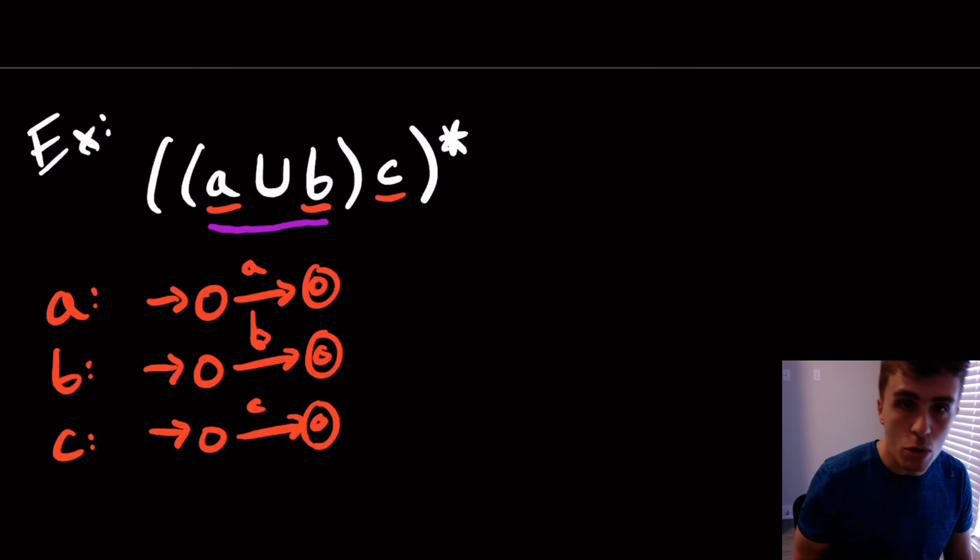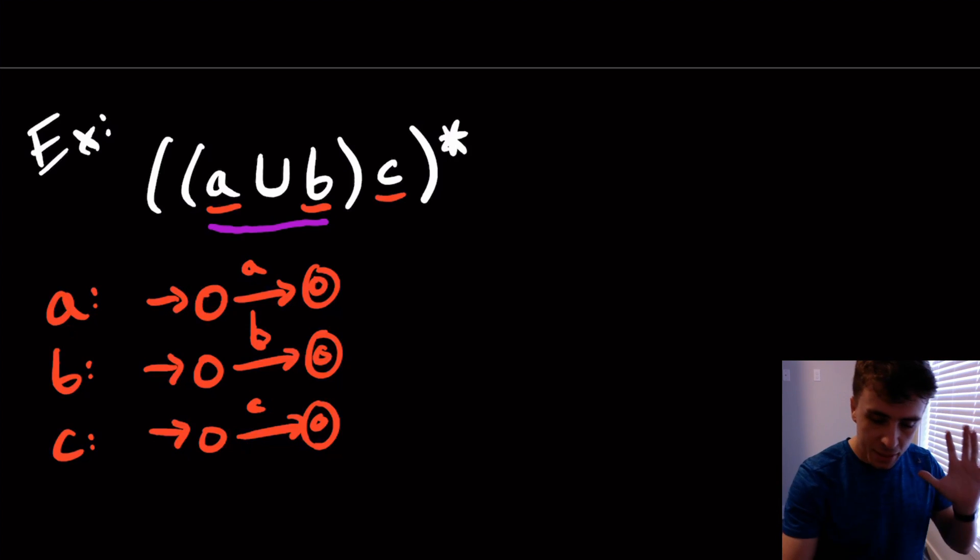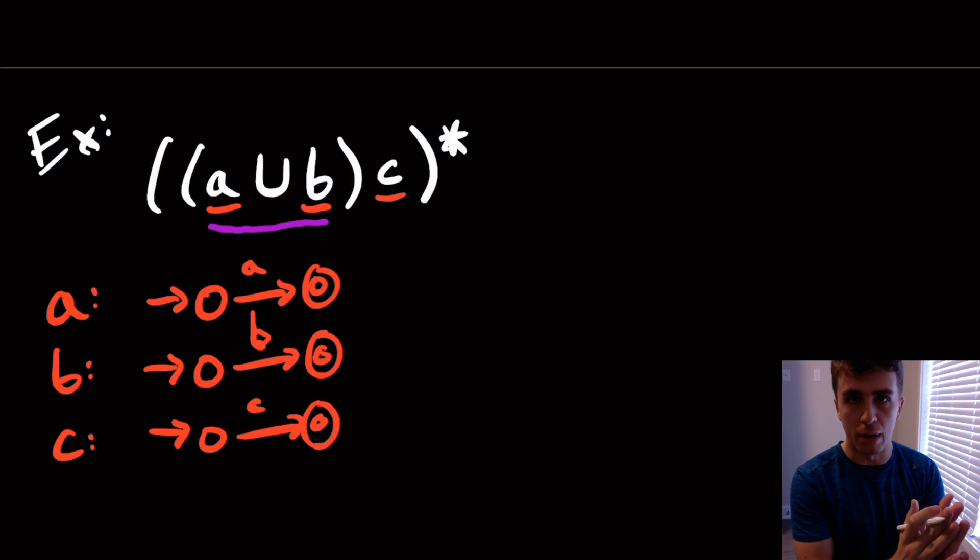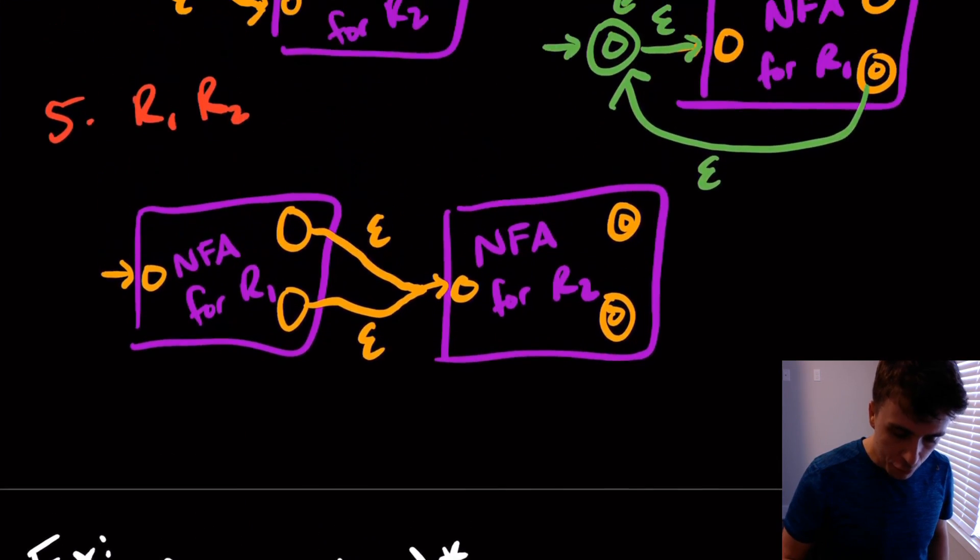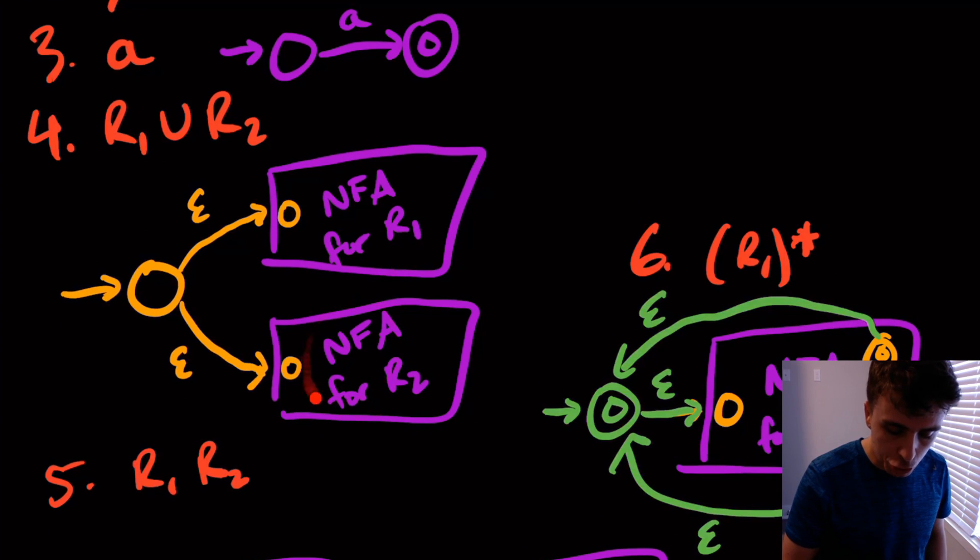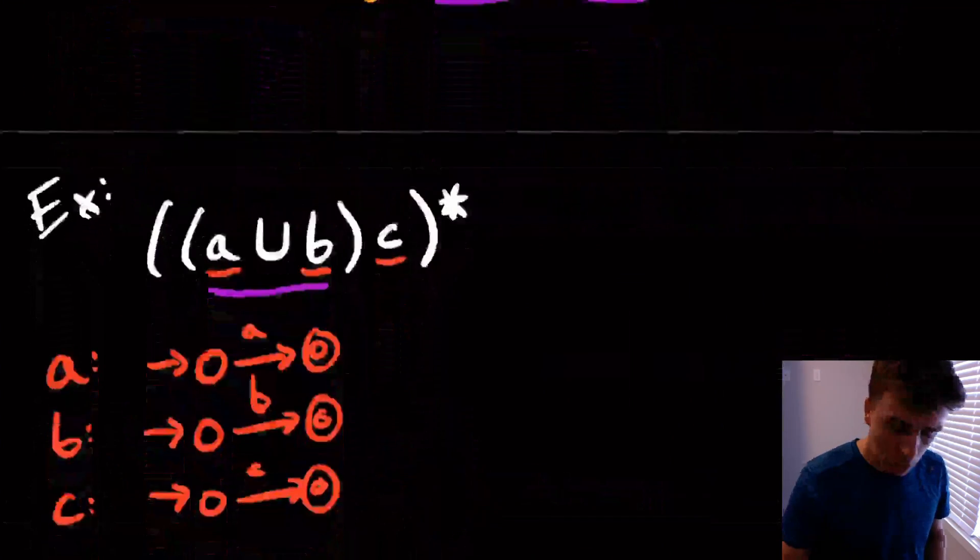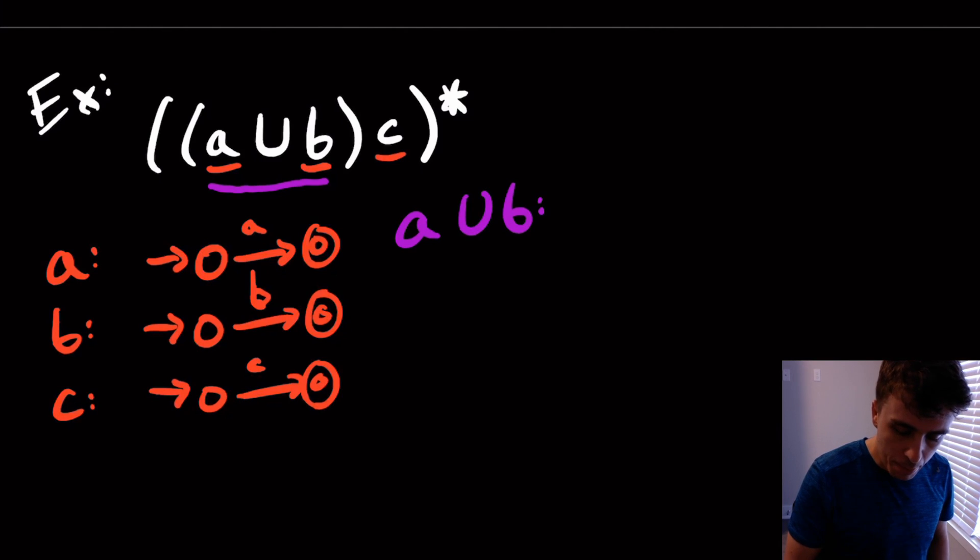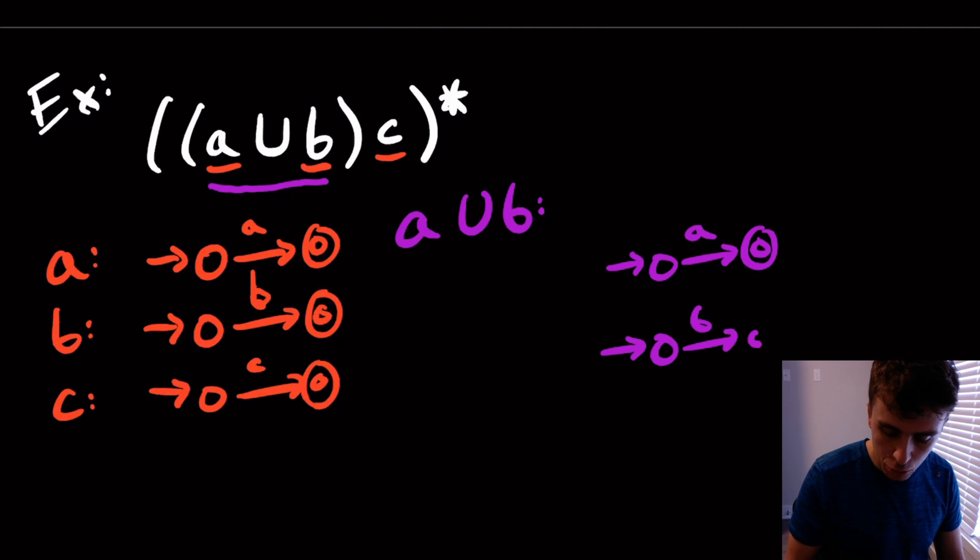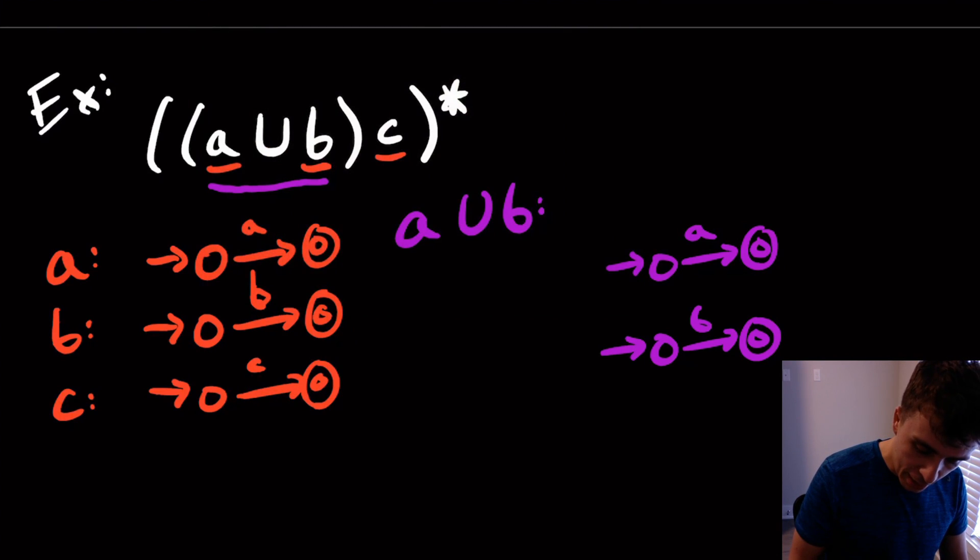Let's actually do A union B here. I'm going to treat the thing on the left and the right of the union as a black box. I'm just focused on union right here. Remember the recipe for union was to take the NFAs for the two smaller pieces, make a brand new start state that epsilon transitions into the start states of both. So I'm going to copy and paste the two NFAs that I have for A and B. Then I'm going to have a new start state that epsilon transitions to the old start states.